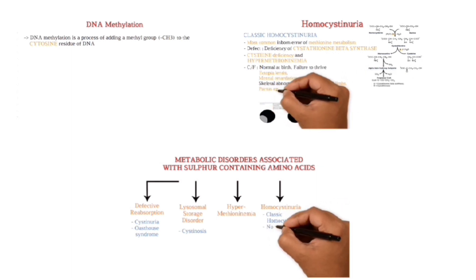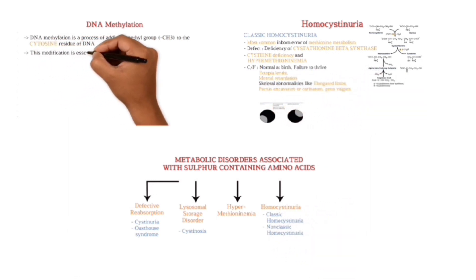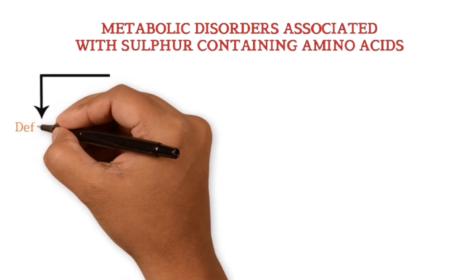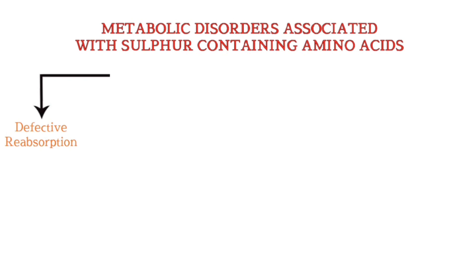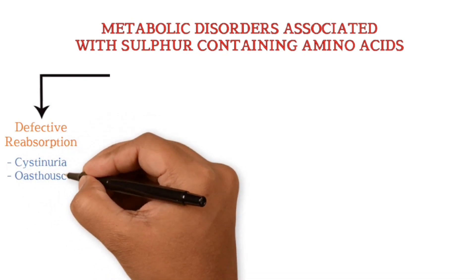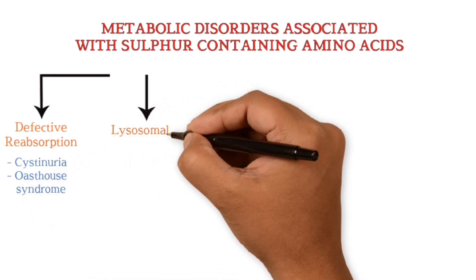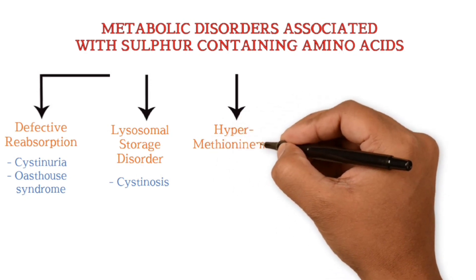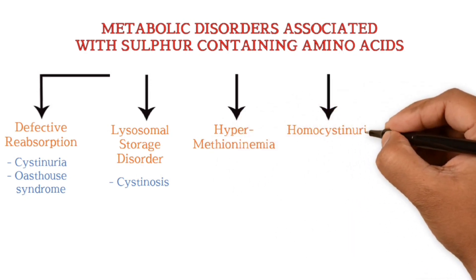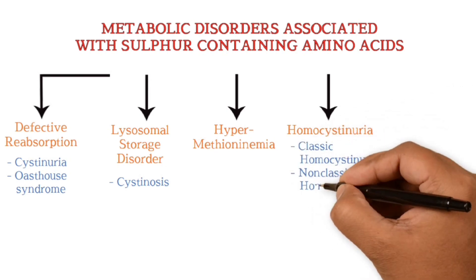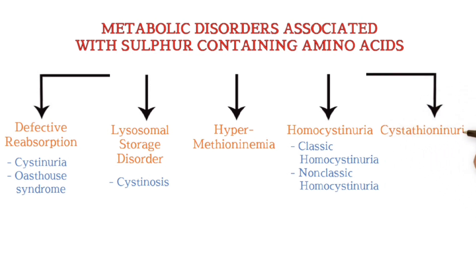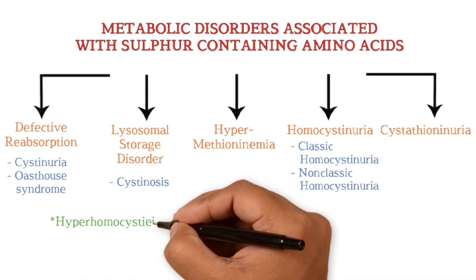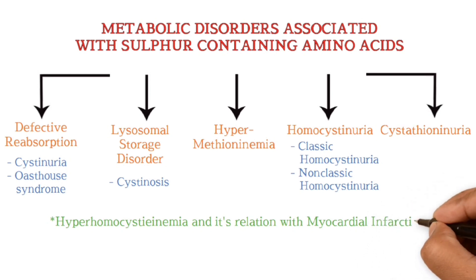This is the third and last video of a series on sulfur-containing amino acids. We will begin with the classification of metabolic illnesses linked to sulfur-containing amino acids. The first category is faulty reabsorption, including cystinuria and Oastow syndrome. The second condition is cystinosis, a lysosomal storage disorder. The third is hypermethioninemia, the fourth is homocystinuria covering both classical and non-classical, and the final condition is cystathioninuria. We will also discuss hyperhomocysteinemia and its relation with myocardial infarction.